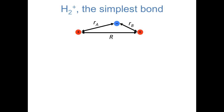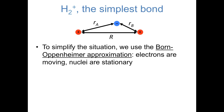In this video, our focus is on the simplest chemical bond, H2+, which has two positively charged nuclei and one negatively charged electron. Let's define the distance between the two nuclei as capital R, and the distances between the electron and nucleus A and nucleus B as lowercase ra and lowercase rb. For this system, you would expect to see six terms in the Hamiltonian, three kinetic energy terms and three potential energy terms. But we're going to make an approximation to simplify things. We use what's called the Born-Oppenheimer approximation, which assumes that electrons are moving but nuclei are stationary. That means we actually only need one kinetic energy term for the electron. So let's write out the Hamiltonian operator for H2+.